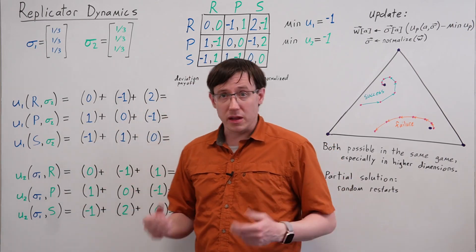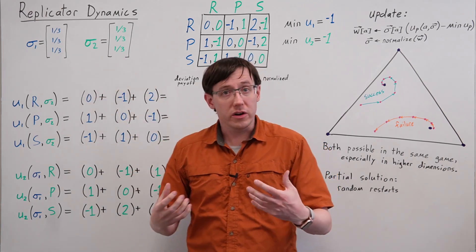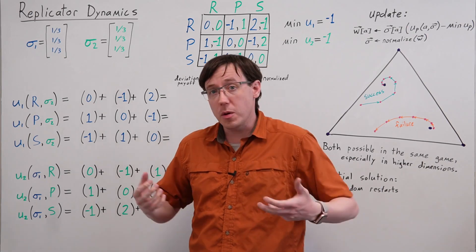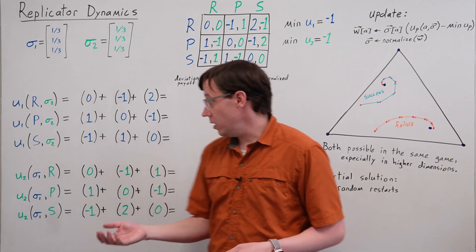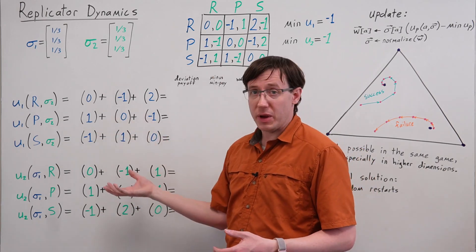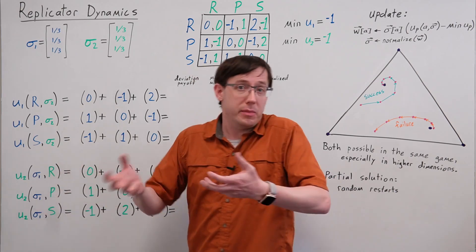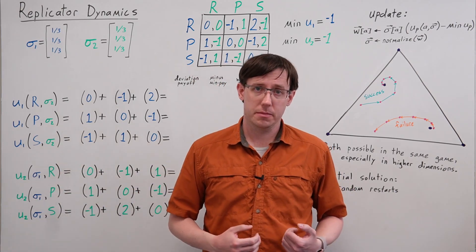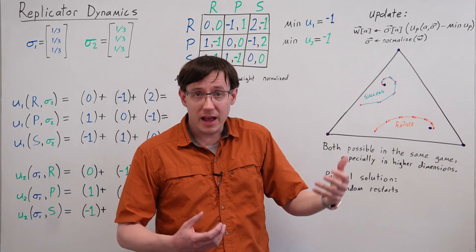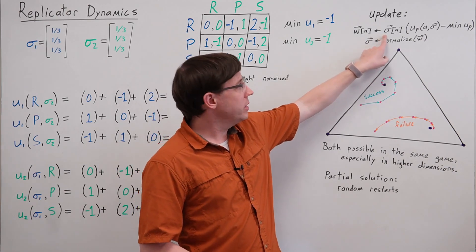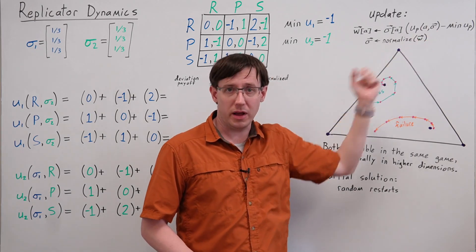Replicator Dynamics begins with some state of the population, which from our perspective means it starts with some arbitrary mixed strategy profile. Then as usual, we will compute deviation payoffs for each action of each player against that mixed strategy profile. We'll use those deviation payoffs to perform an update that, in essence, is multiplying each probability by the corresponding deviation payoff and then renormalizing.